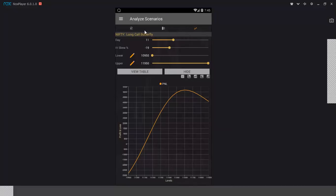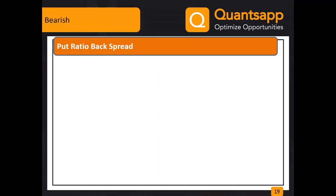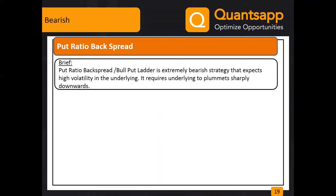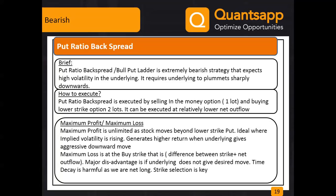From the bearish perspective: the put ratio backspread and put butterfly spread. The put ratio backspread is the mirror image of the call one — same conditions apply: expecting volatility to increase and expecting a very sharp downward movement in the stock or index. You sell one in-the-money put and buy two out-of-the-money puts with limited outflow. Maximum profit is when the index falls below the bought strike.